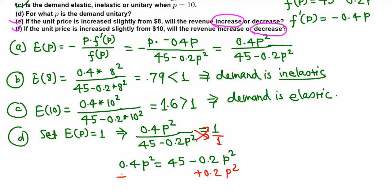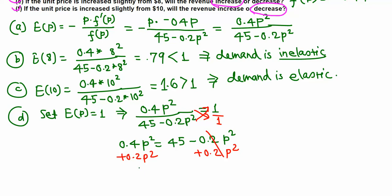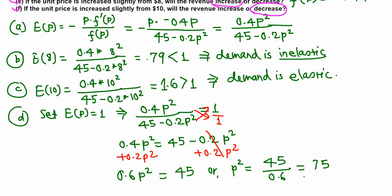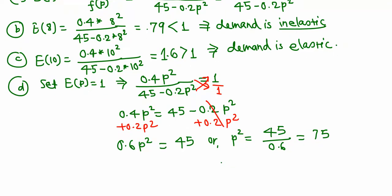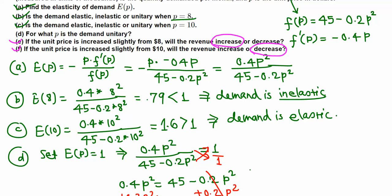Adding 0.2p squared to both sides, we get 0.6p squared equals 45. Dividing by 0.6, p squared equals 45 over 0.6, which is 75. Taking the square root, p equals the square root of 75, which is approximately 8.66. That is the price at which demand is unitary, and parts E and F are also complete.